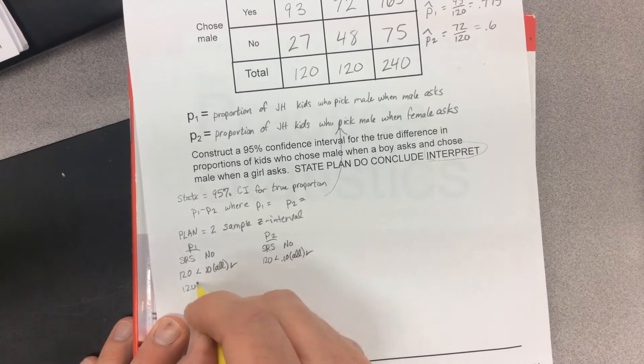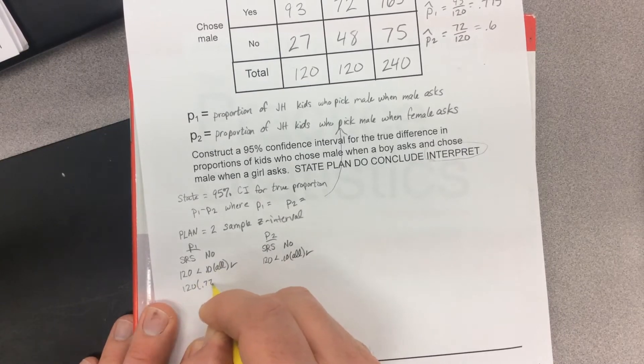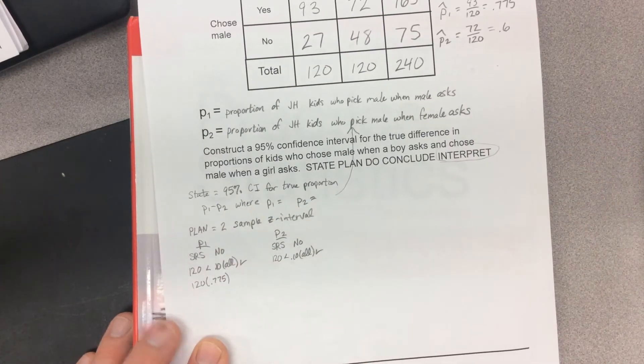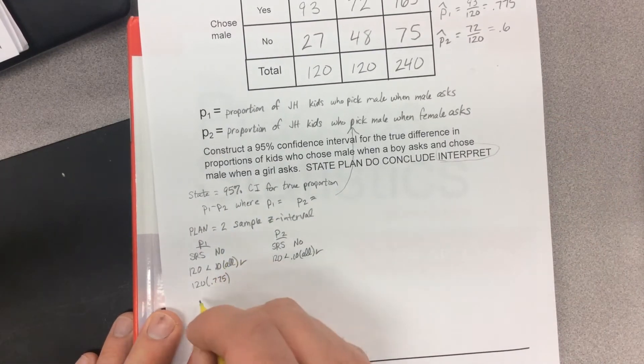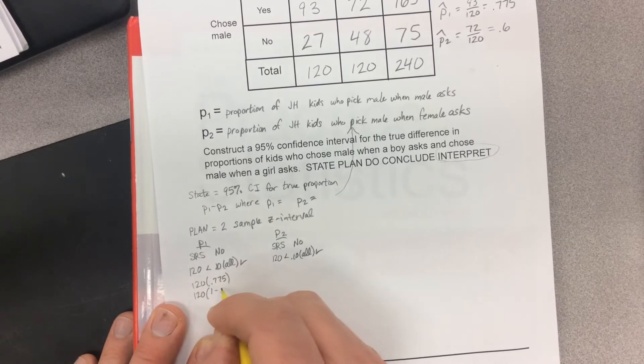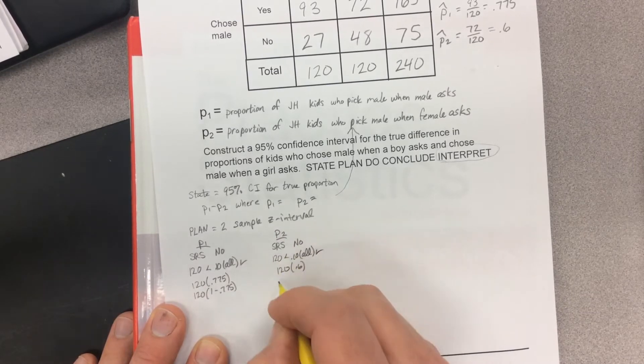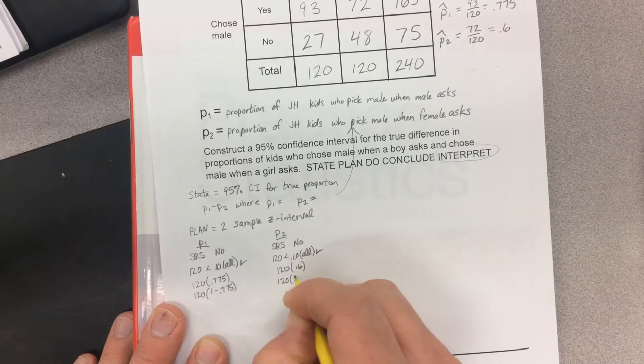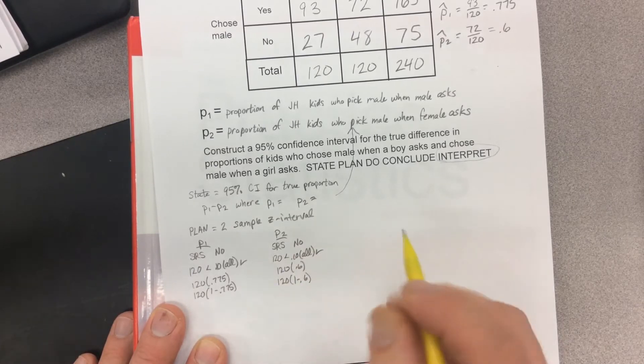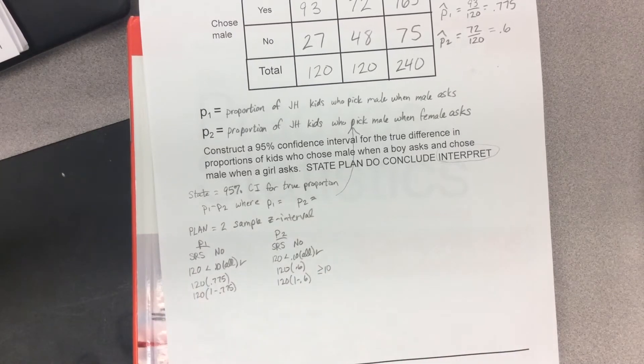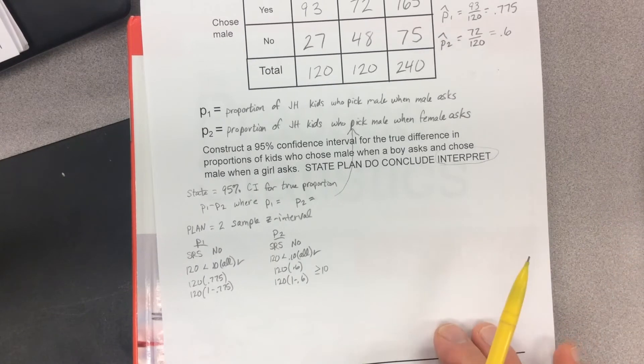120 times 0.775, I got the 0.775 from up there, 120 was how many kids we sampled. 120 times 1 minus 0.775, and 120 times 0.6. All of these are supposed to be greater than or equal to 10, and they are. We didn't meet the SRS conditions, but we're going to do the math anyway.